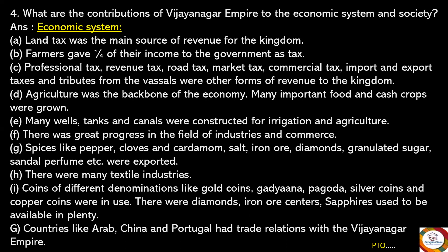Next question: What are the contributions of the Vijayanagara Empire to the economic system and society? Under the economic system: land tax was the main source of revenue. Farmers gave one-fourth of their income to the government as tax. Professional tax, revenue tax, road tax, market tax, commercial tax, import and export taxes, and tributes from vassals were other forms of revenue. Agriculture was the backbone of the economy; many important food and cash crops were grown, and many wells, tanks, and canals were constructed for irrigation.